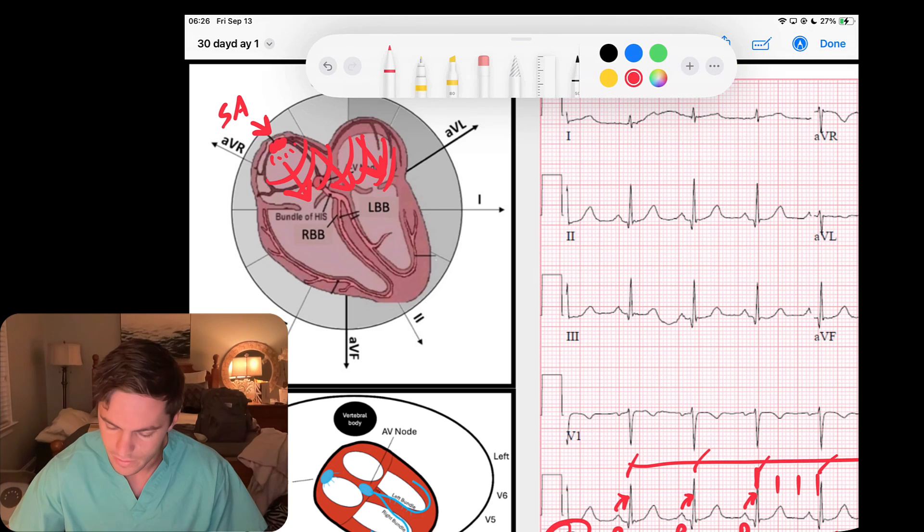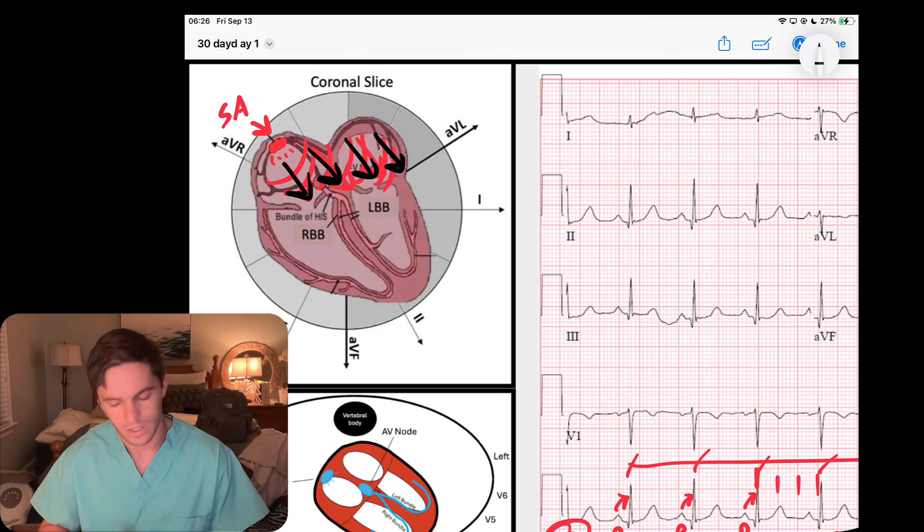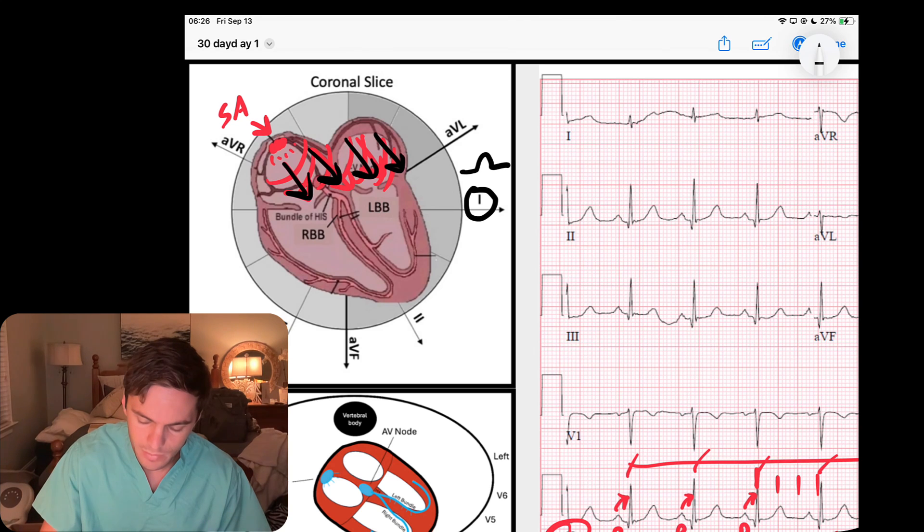Those P waves are going down to the left, and we know that going down to the left is heading towards lead one, so we'll have an upright P wave in lead one, towards AVF we'll have an upright P wave in AVF, and the same thing in lead two.